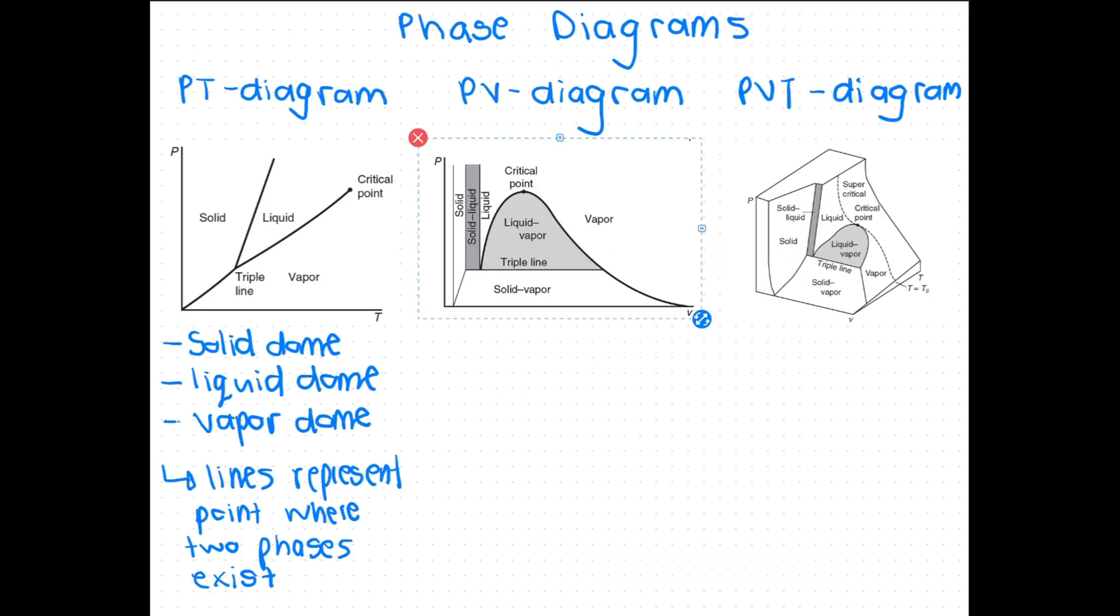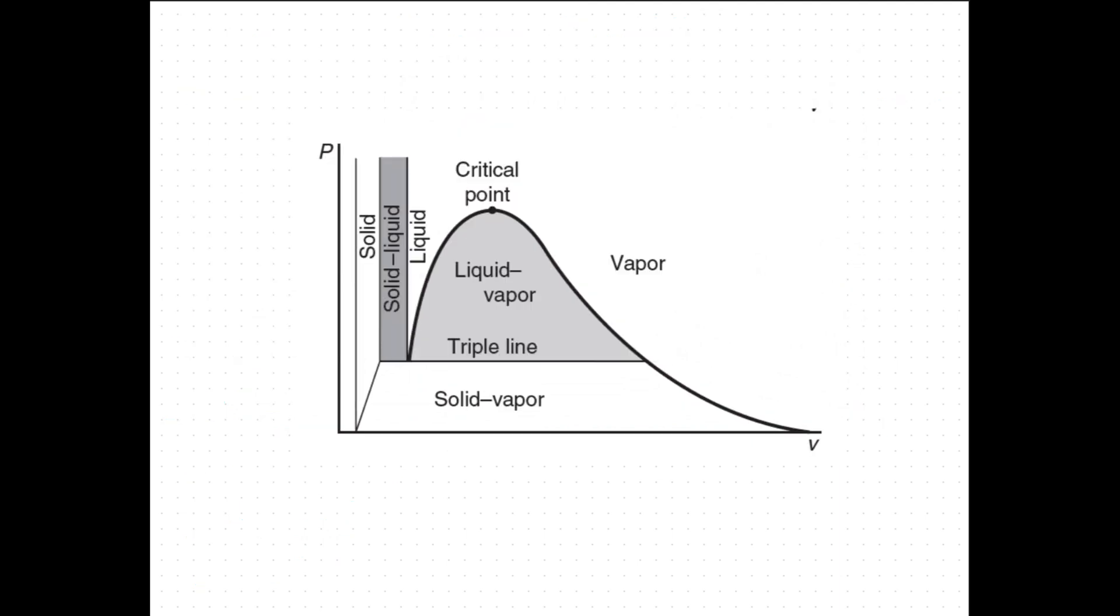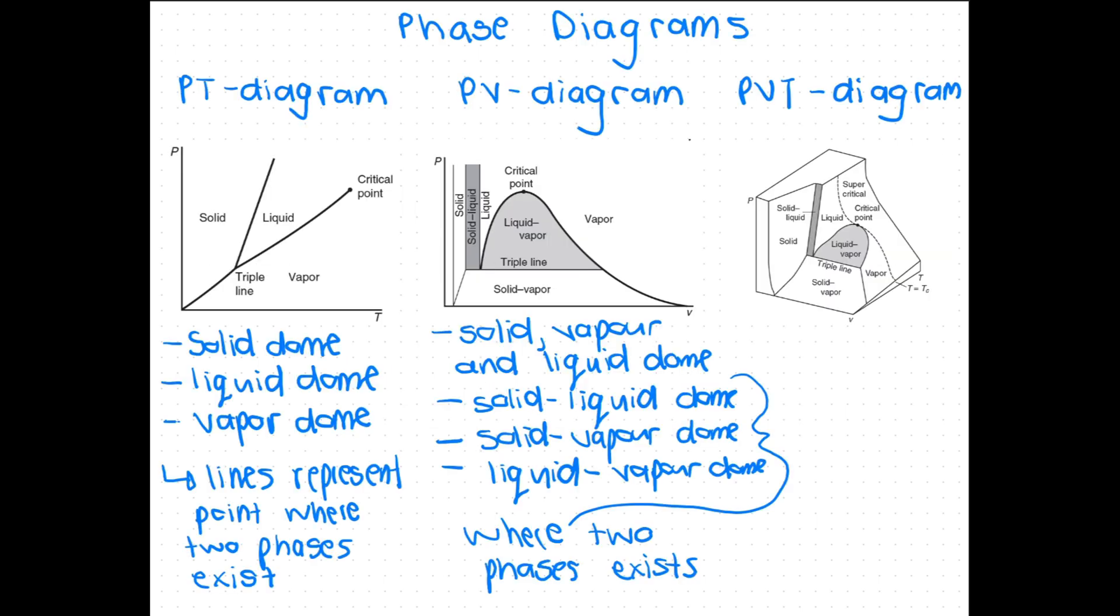Let's look at the PV diagram. Again you can see how the diagram is separated into domes. In the PV diagram there are a bit more domes: the usual solid, liquid and vapor, but then there's a solid liquid dome, a liquid vapor and a solid vapor dome. In these extra domes the pressure and volume combination does not constrain to one phase alone, and thus there exist two phases in these domes.